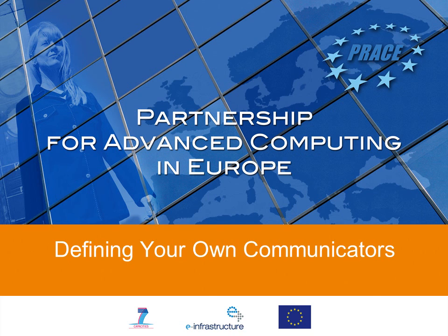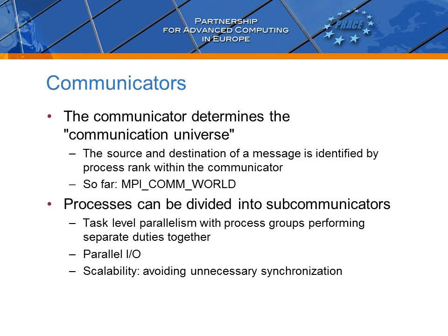MPI provides a set of routines for defining and manipulating custom communicators. The communicator is a communication universe given as an input argument to most MPI communication procedures. Within it, the source and the destination of a message is identified by the process rank. While we usually operate within MPI_Comm_World, which encompasses all available MPI processes, it is quite often beneficial to define new communicators representing subgroups of these processes.